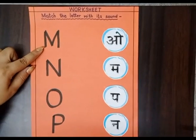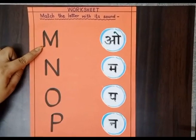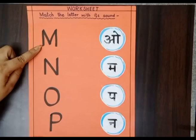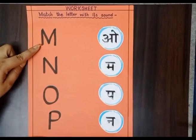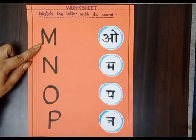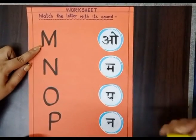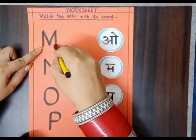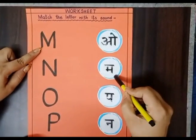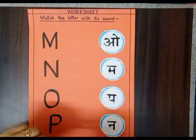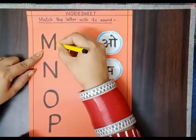This is letter M, and M says — M, monkey. M, mango. So where's M? This is M. Where's M? This is M. So match the letter with its sound — M.